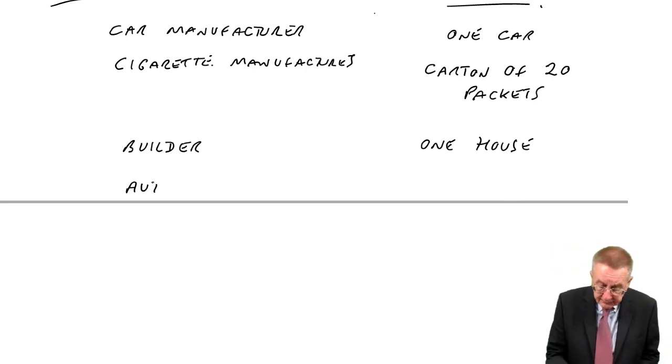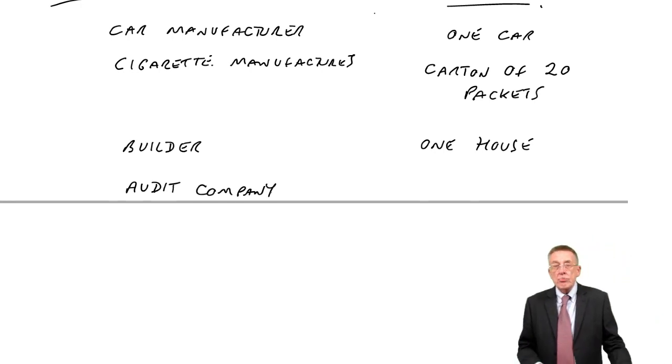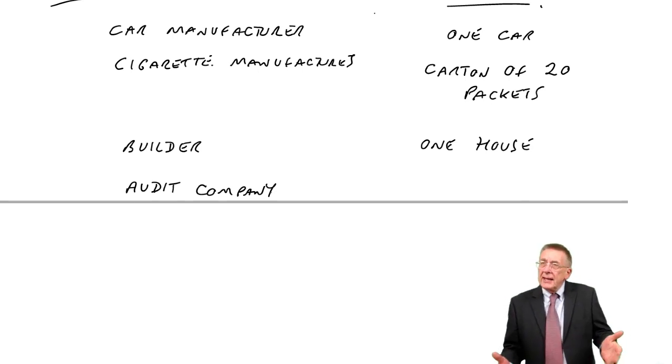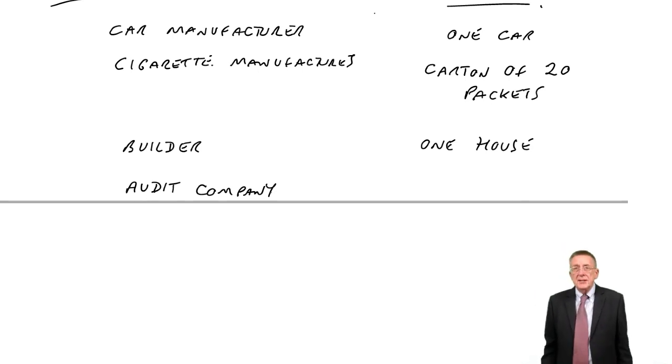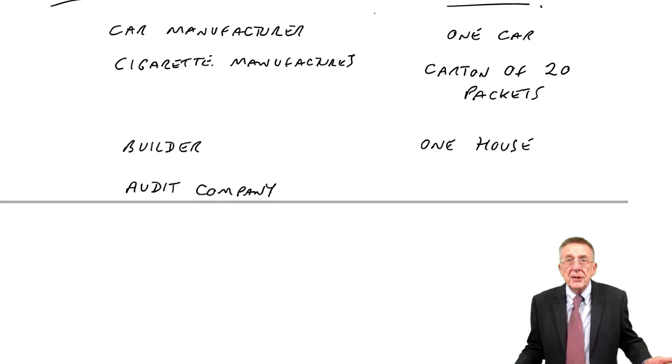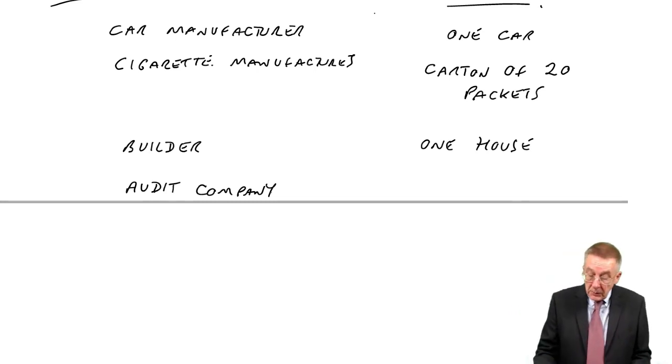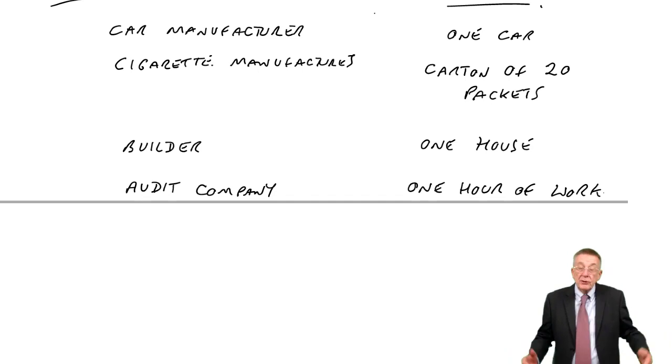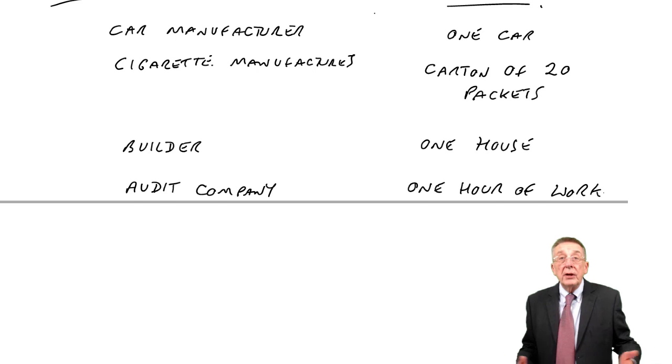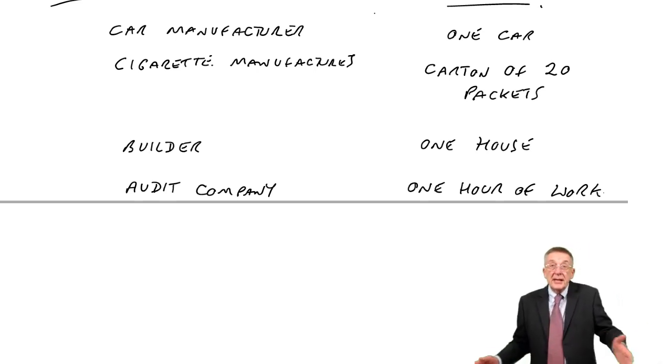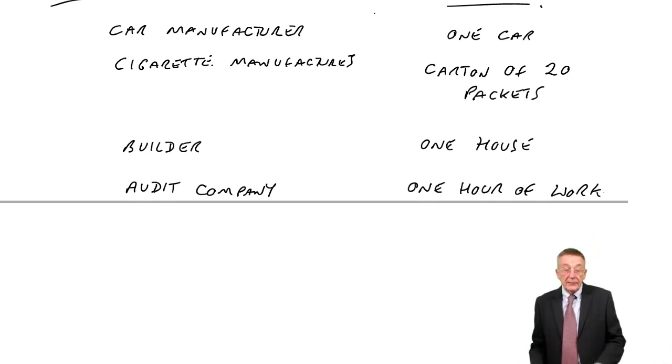Now, finally, an audit company or an accounting company or lawyers, that sort of thing. What would their unit be? What are they selling? They're selling audits. But the trouble is, each audit is different. A small company, they may only be spending a few hours. A large company, they may be spending several weeks or months. And so how do they go about costing? Well, what they tend to do is work out the cost of one hour of work. And they say, well, for every hour we work, it's costing $100. Fine. If one audit takes 10 hours, well, it's $1,000. If another takes 20 hours, well, it's $100 an hour, that's $2,000. But the cost unit itself would be an hour of work.